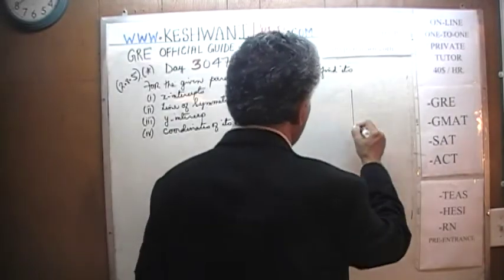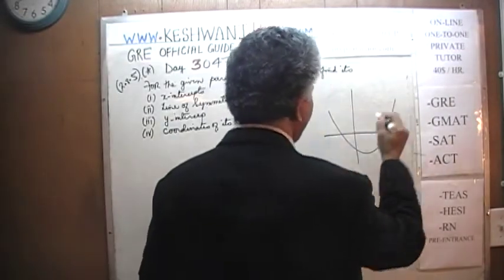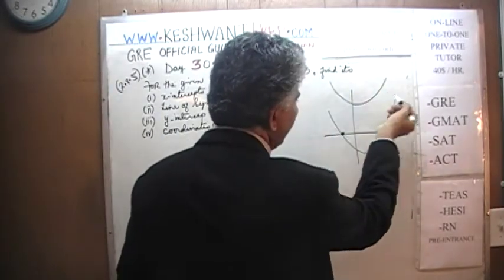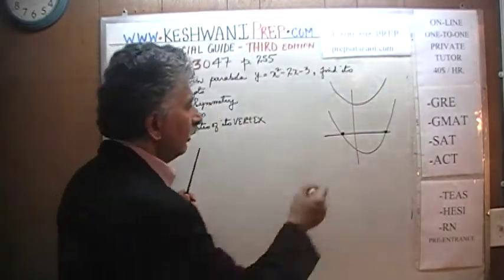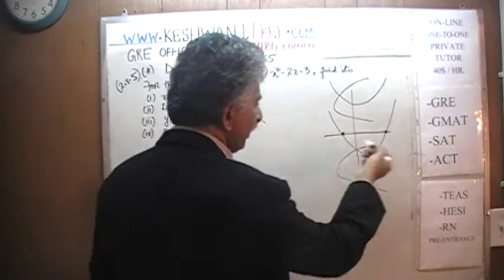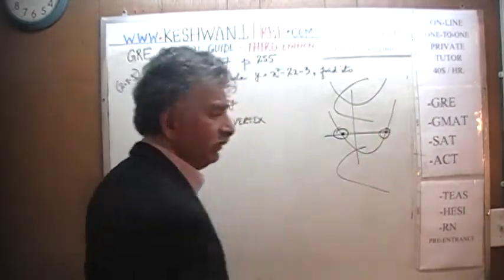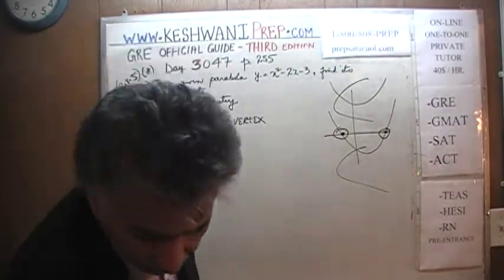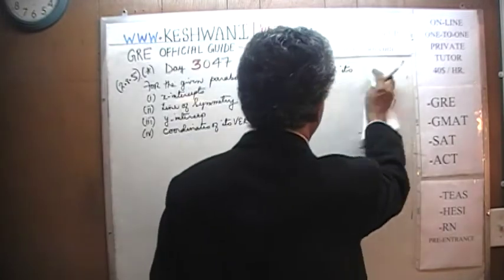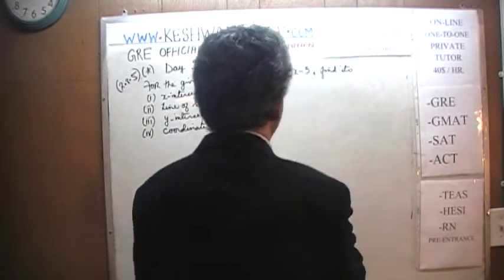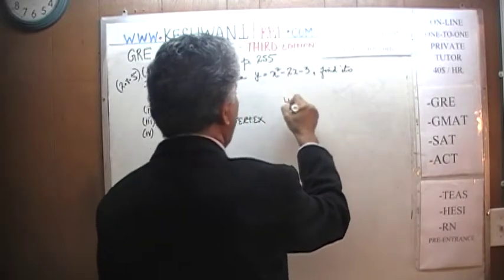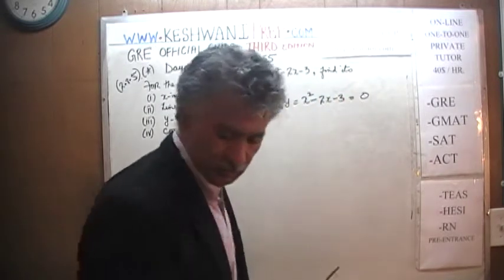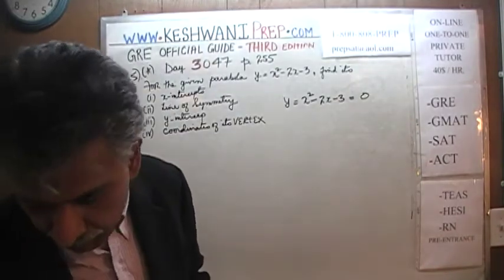If you have a parabola and assuming that it has an X-intercept, at that point Y is equal to 0. So to find the X-intercept, we are going to set the equation Y = X² - 2X - 3 equal to 0 and just solve this equation. It's a simple quadratic equation — we are going to factorize it.